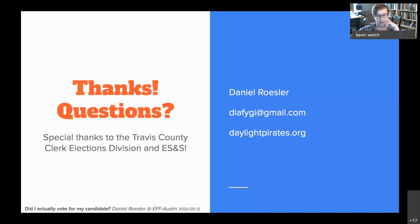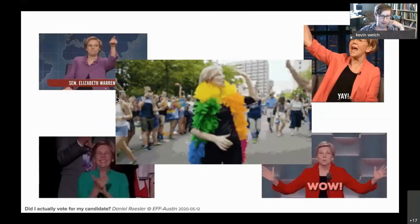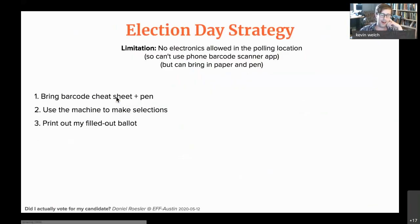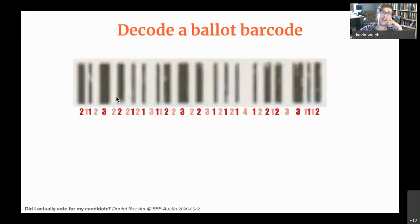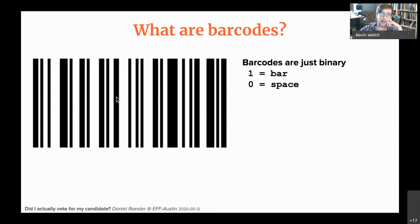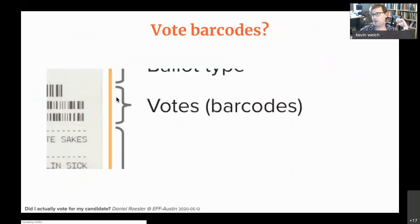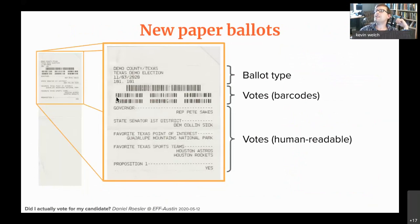As a programmer, the human-readable section not being what the scanner reads makes total sense — writing a system to read human text is way more error-prone than the clean elegance of a barcode. The question is whether there's an easier way to do this verification that wouldn't run afoul of the rules around what you can bring into the voting booth.